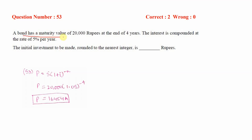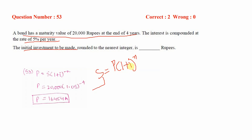A bond has a maturity value of 20,000 rupees at the end of four years. Interest is compounded at 5% per year. Using S = P(1 + i)^n, where S = 20,000, i = 0.05, and n = 4, solving for the initial investment P gives P = 16,454 rupees.